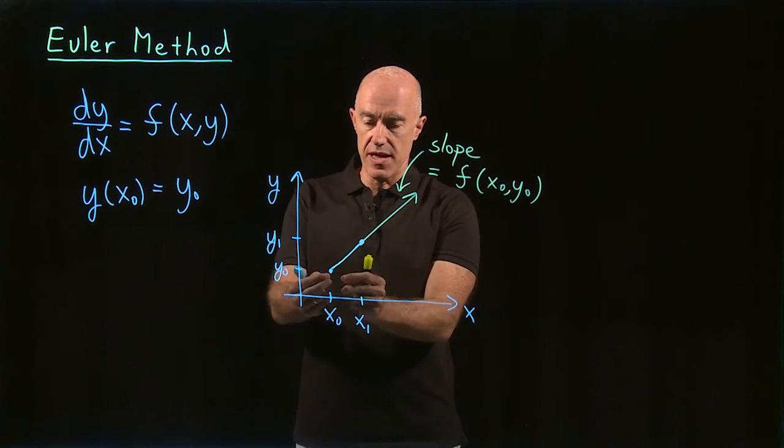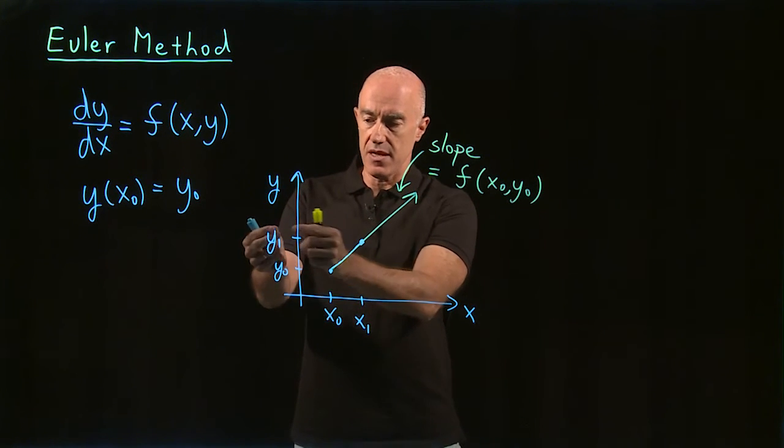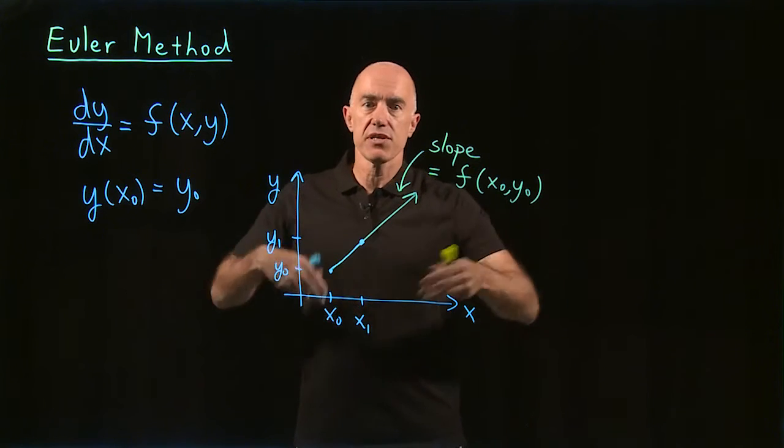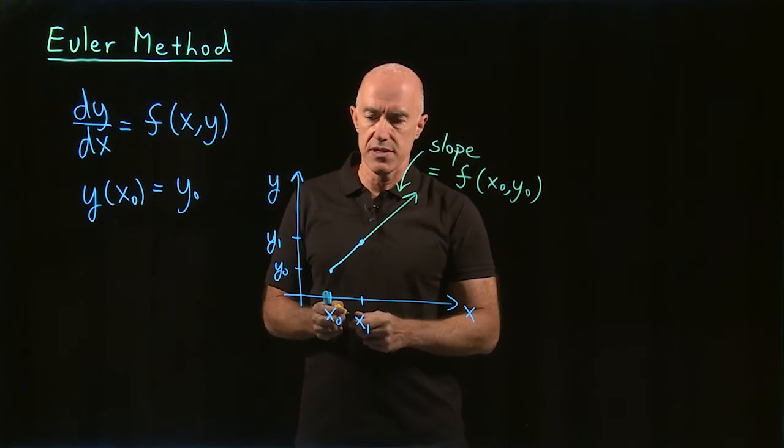Then what do we do next? Well, then we're at the point x1, y1. And we just repeat the process. That becomes our new initial condition.